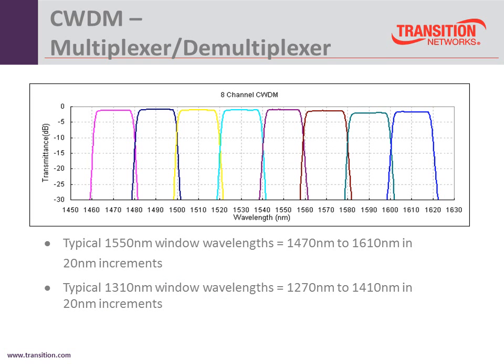This is what CWDM looks like. You can see the different color bands are the actual different wavelengths. There's always a center frequency, and the center frequency is 20 nanometers apart from each other.